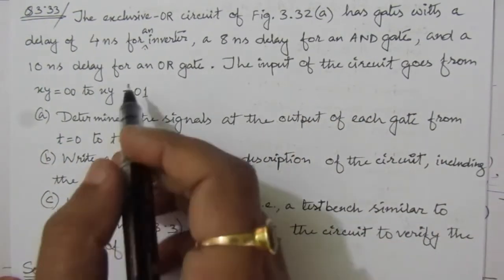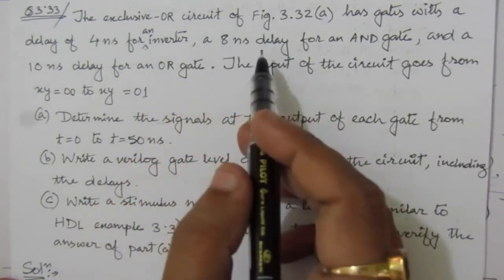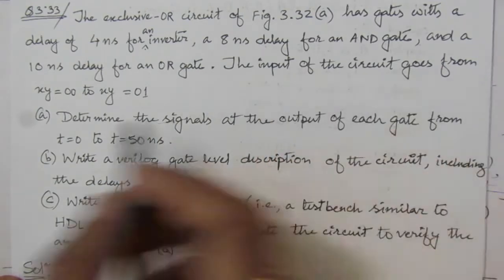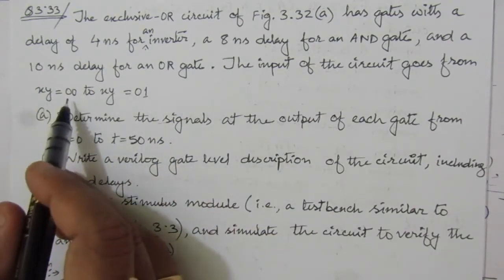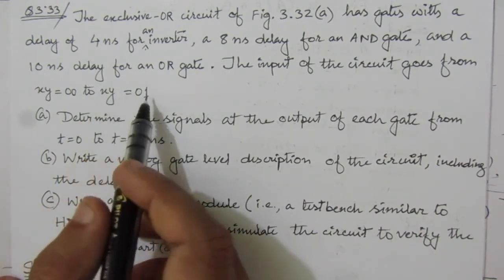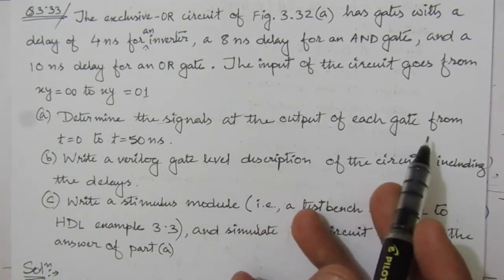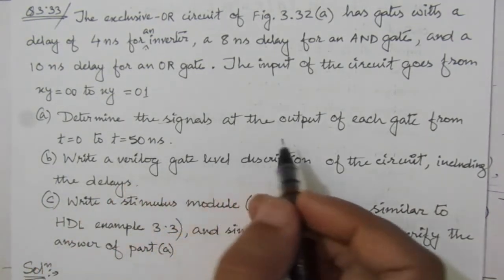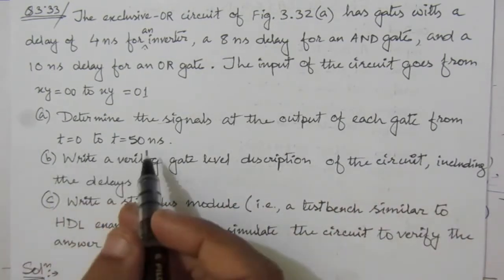These are the given delays: 4 nanoseconds for the NOT gate (inverter), 8 nanoseconds for the AND gate, and 10 nanoseconds for the OR gate. The input of the circuit goes from XY equal to 00 to XY equal to 01. That means initially X and Y are both zero, then X remains zero and Y changes to one. We have to determine the signals at the output of each gate from t=0 to t=50 nanoseconds.